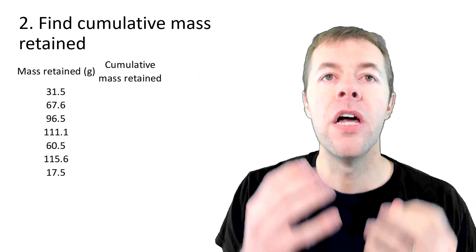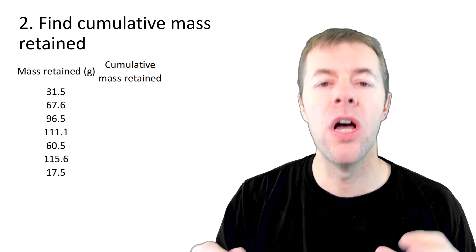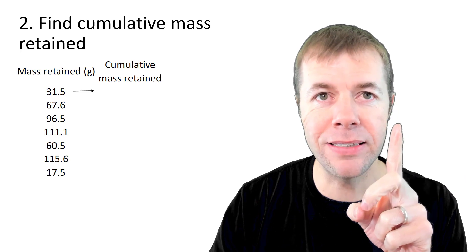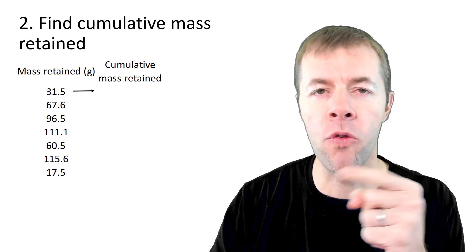Now let's talk about calculating the cumulative mass retained. First step, we're just going to bring over the amount of mass retained on the highest sieve. 31.5 just comes over in the first column.